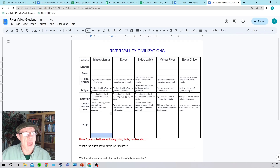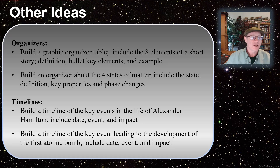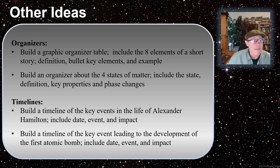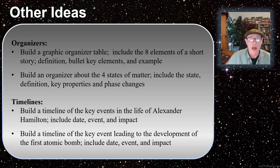Let's go ahead and wrap this up with some other ideas you could try with your organizers. Build a graphic organizer table including eight elements of a short story, their definitions, key bullet points, and an example — the examples were great, I highly recommend this one for English teachers. Build an organizer about the four states of matter including state definition, key property, and phase changes — something for the science teachers. Build a timeline of key events in Alexander Hamilton's life including date, event, and impact. Build a timeline of key events leading up to the development of the first atomic bomb including date, event, and impact. This shows you the flexibility you can use to customize timelines and organizers for your classroom.